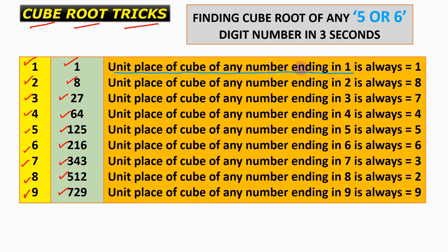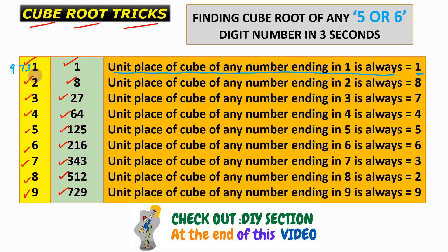An important thing to focus on is the unit place of the cube of any number. The unit place of the cube of any number ending in 1 is always 1. For 2 it's 8, for 3 it's 7, for 4 it's 4, for 5 it's 5, for 6 it's 6, for 7 it's 3, for 8 it's 2, and for 9 it's 9.